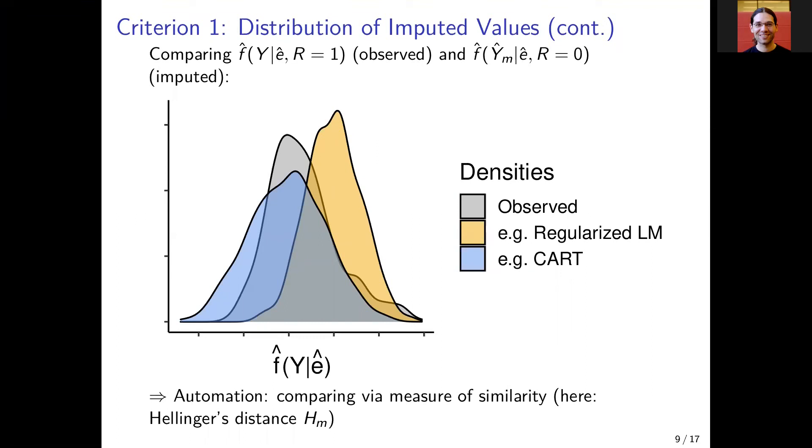The more overlap between the observed and the potential imputed density, the more plausible the imputed missing values based on missing at random assumption.